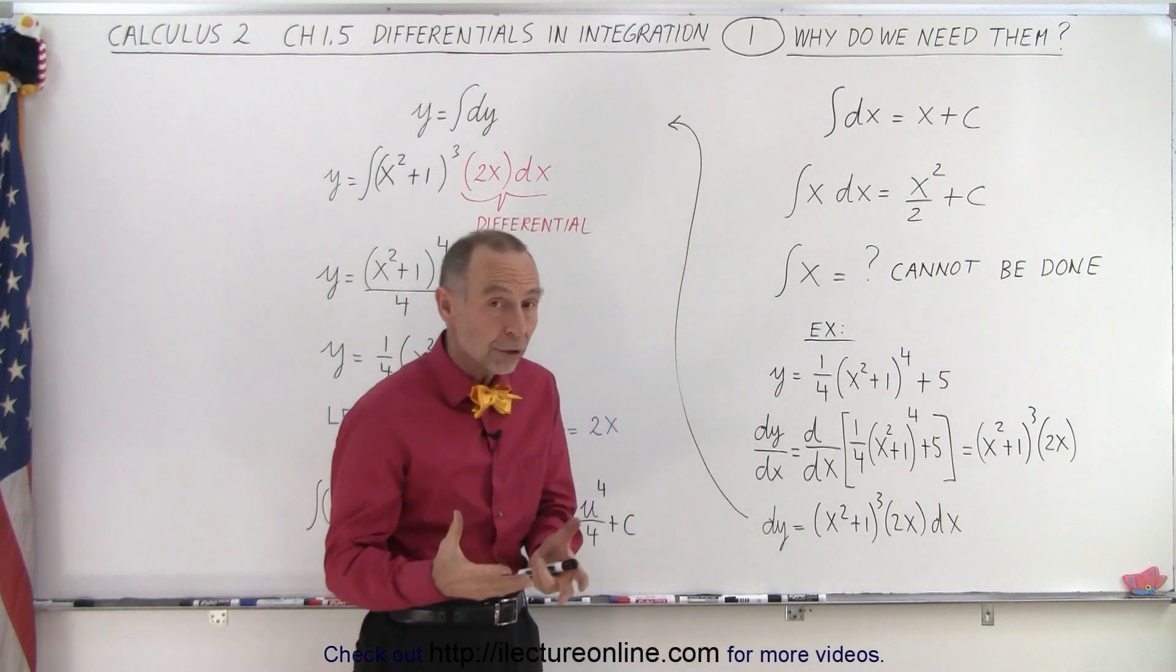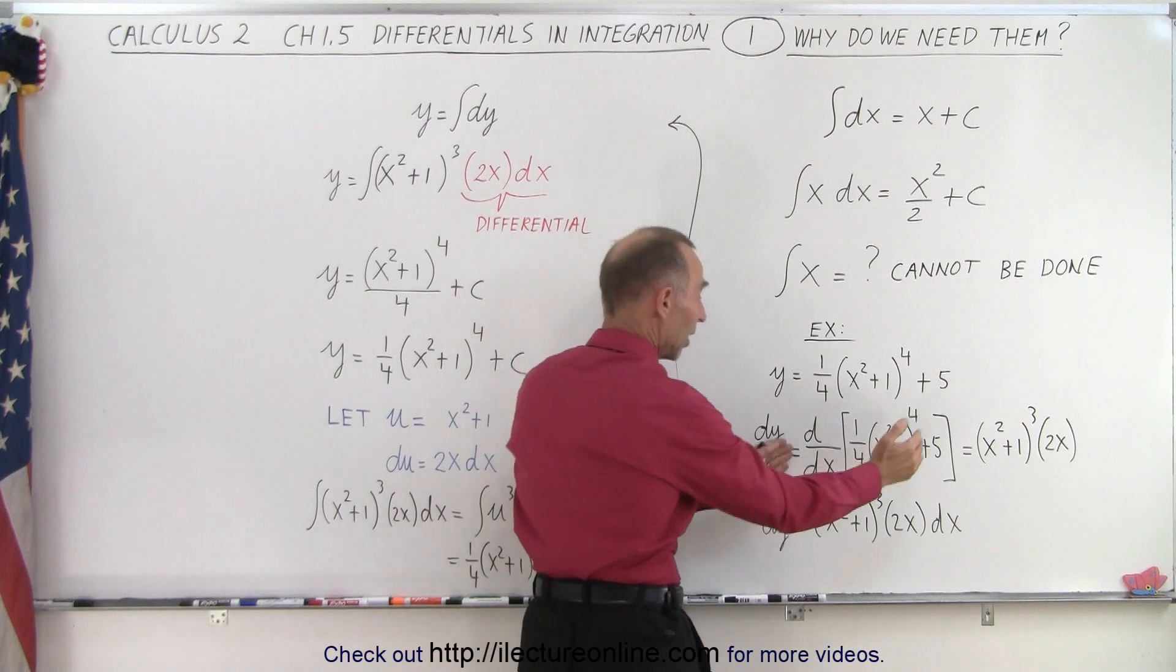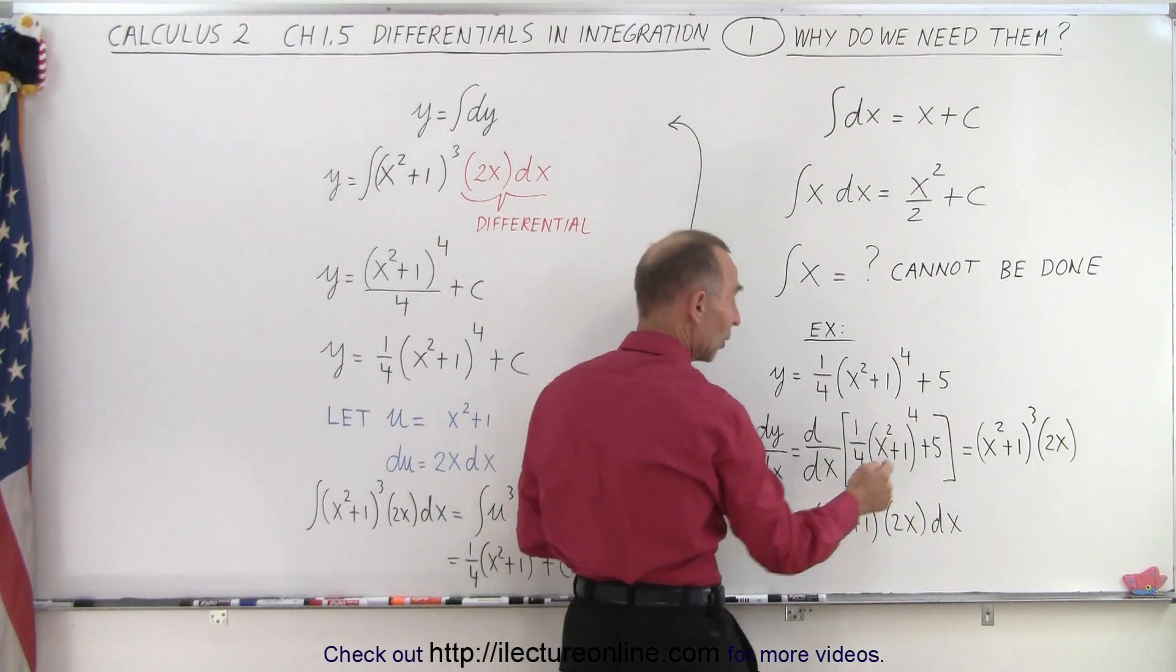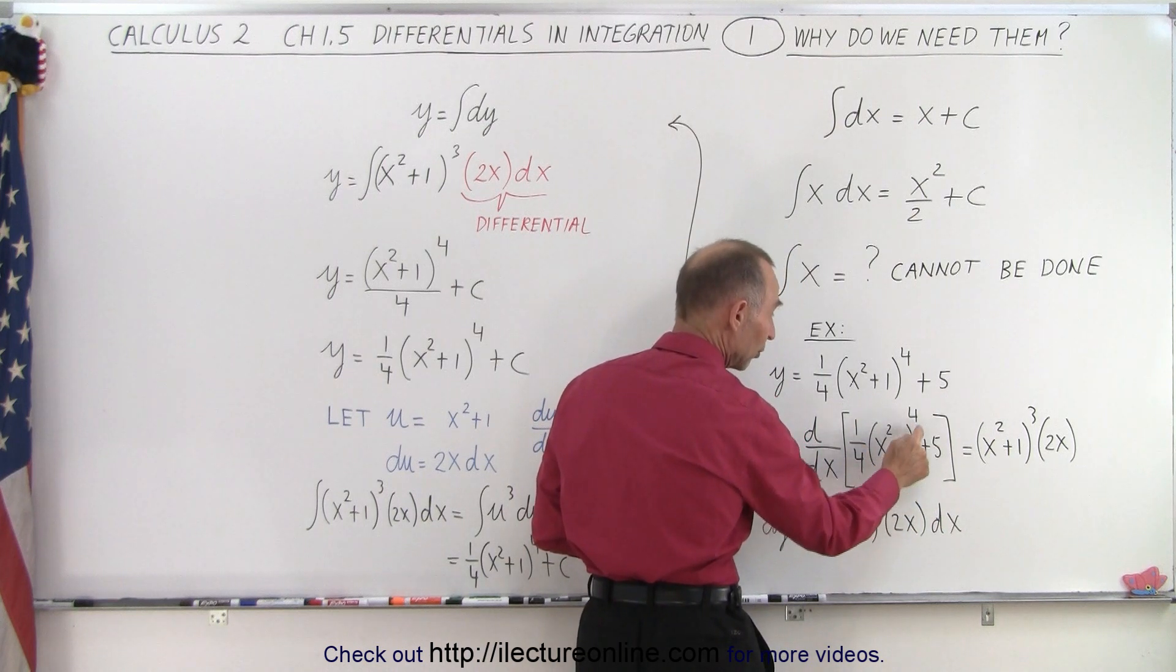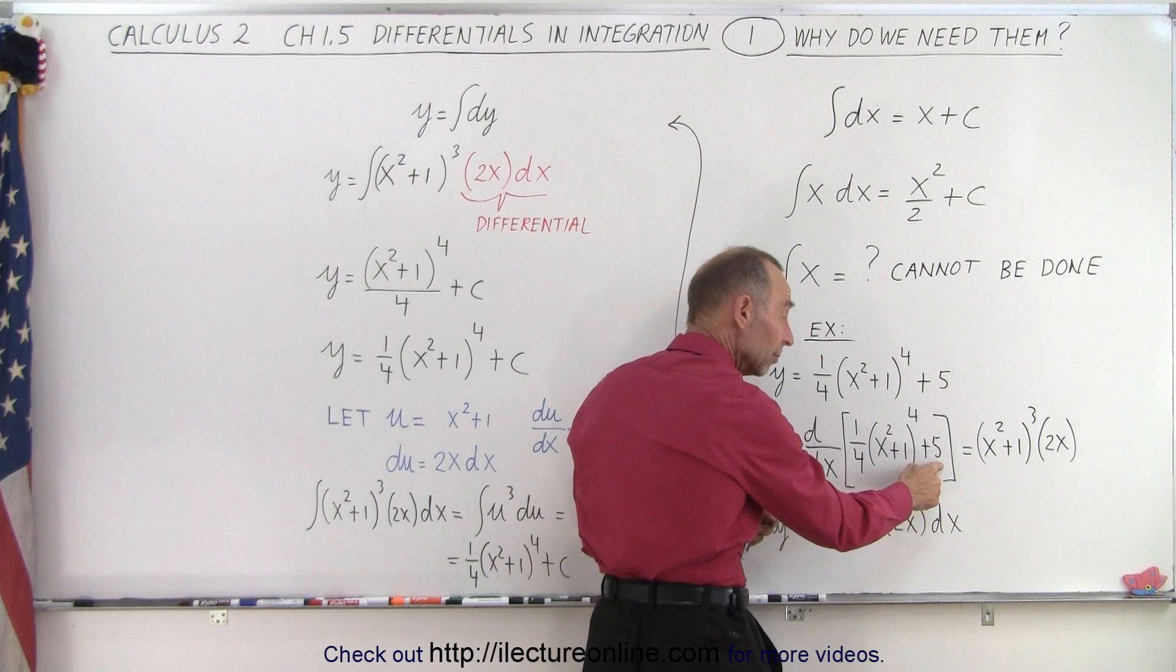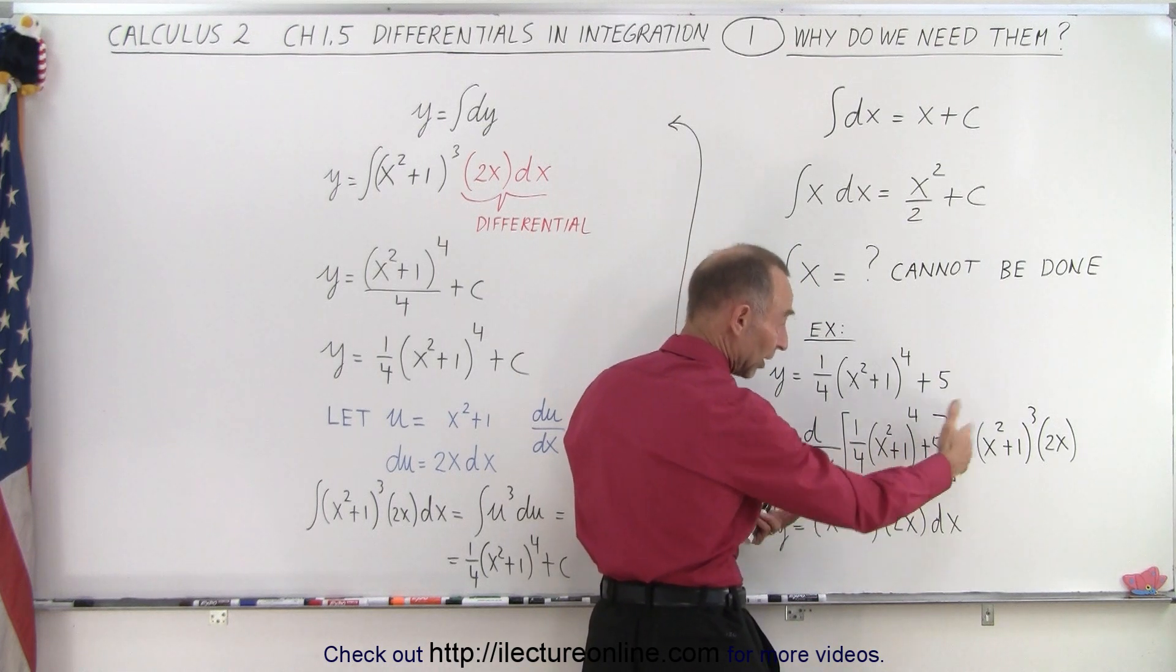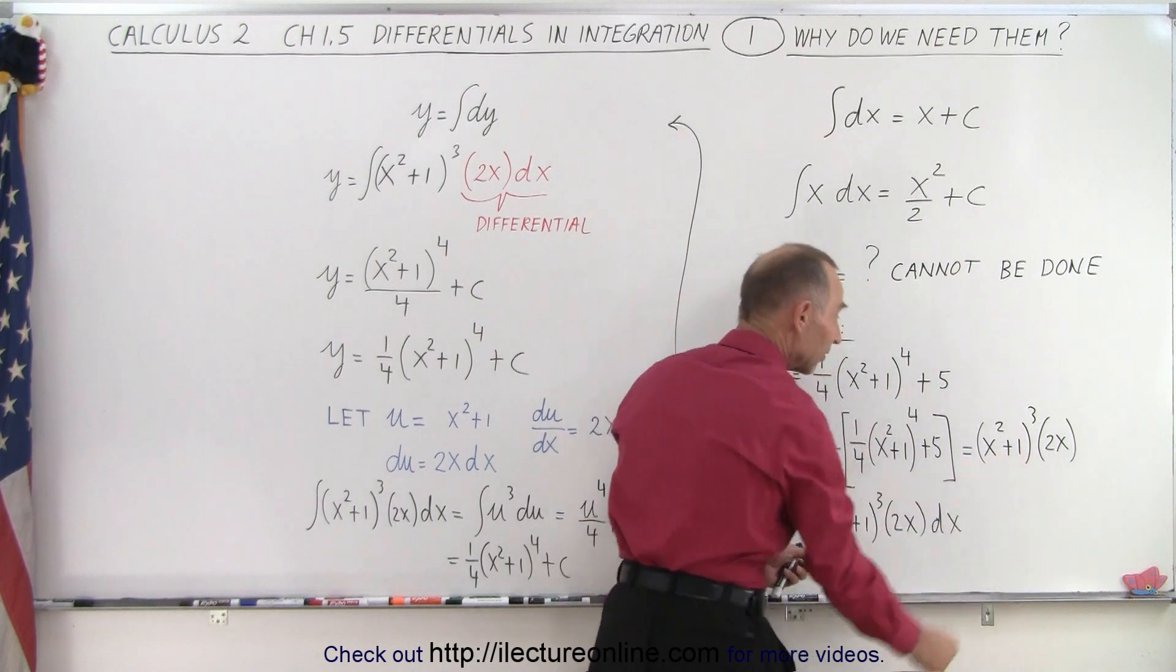And so what we're going to do now is we're going to take the derivative of this with respect to x, that's the d/dx of the function, and when we do that we have four times a quarter which is one, times x squared plus one to the exponent of one less which is three. The derivative of a constant is zero, so that drops off, times the derivative of what's inside the parentheses which is two x.